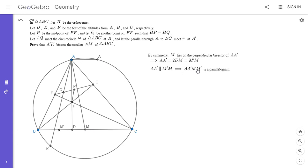So A, A', M', M is a parallelogram, and so its diagonals bisect each other. So really, we want to show that A'M' and K are collinear. That would solve the problem. All right.